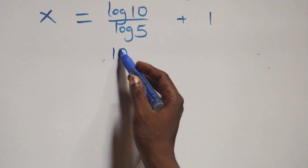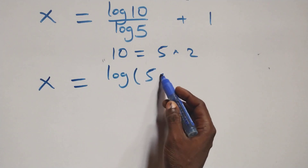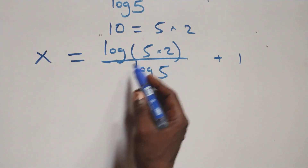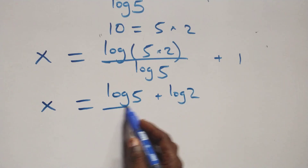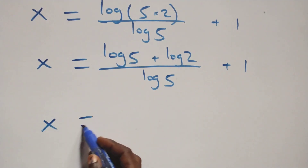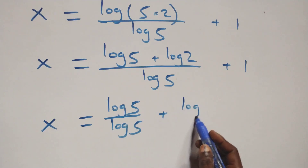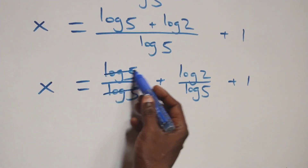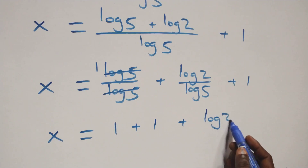So we have x equals log 10 over log 5 plus 1. Now 10 can be expressed as 5 times 2, so x equals log(5 times 2) over log 5 plus 1. Applying the product rule again: x equals (log 5 plus log 2) over log 5 plus 1. Separating fractions: log 5 over log 5 cancels giving 1, so x equals 1 plus log 2 over log 5 plus 1.